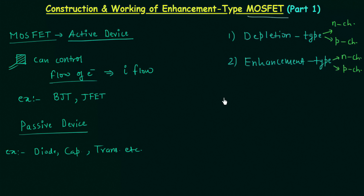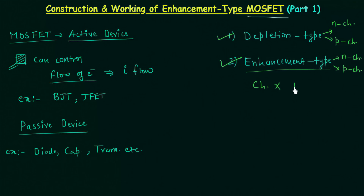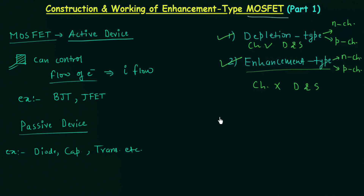The construction is almost the same except one important difference. In case of enhancement type MOSFET there is no channel between drain and source initially, but in case of depletion type MOSFET a channel is there from the beginning between drain and source. In this lecture we will study the enhancement type MOSFET, and to explain the construction and working I will take N channel enhancement type MOSFET.